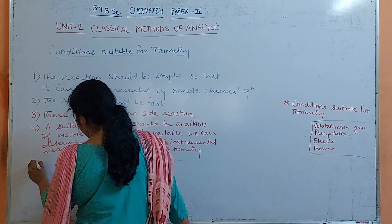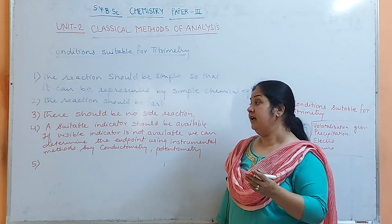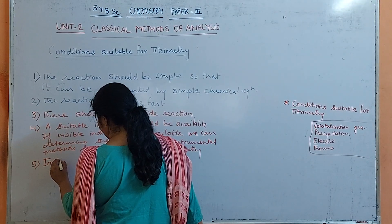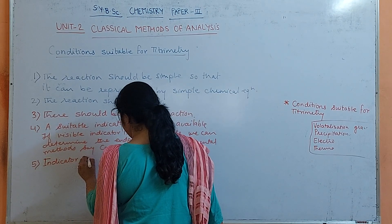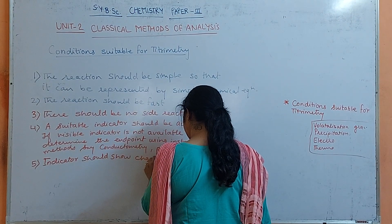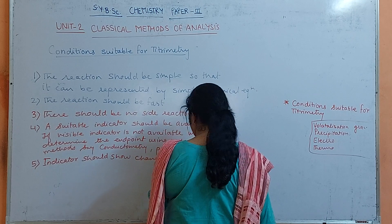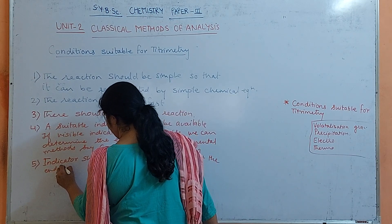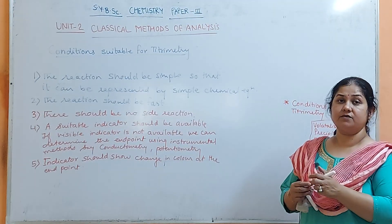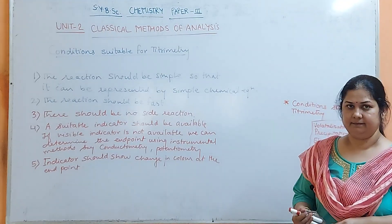This indicator, if you are using one, should show a change in color or change in property at the time of the end point. These are the conditions which are suitable for Titrimetry. Types of Titrimetry we will see in the next lecture. Thank you.